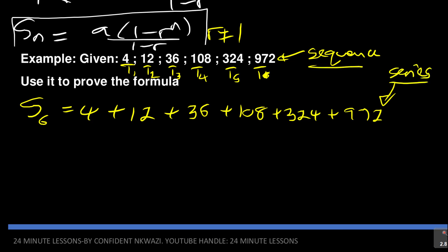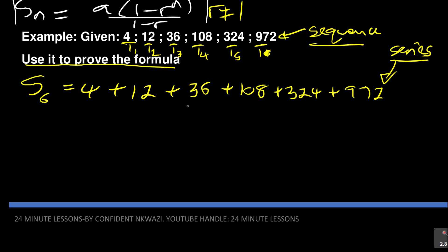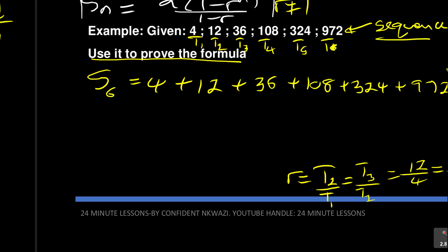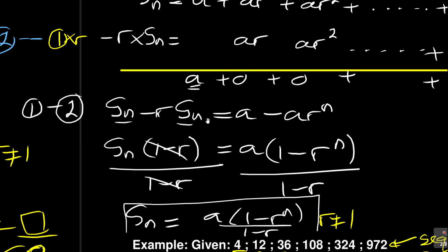The sequence uses commas or semicolons between terms; the series uses summation — we are adding. Now let's use this to prove the formula. What is the common ratio here? The common ratio r = t2/t1 = t3/t2. So r = 12/4 = 3, and 36/12 = 3. So the common ratio is 3.